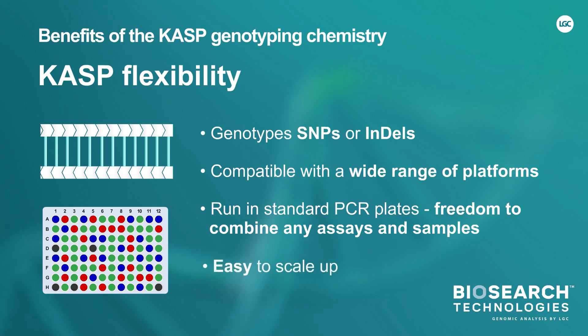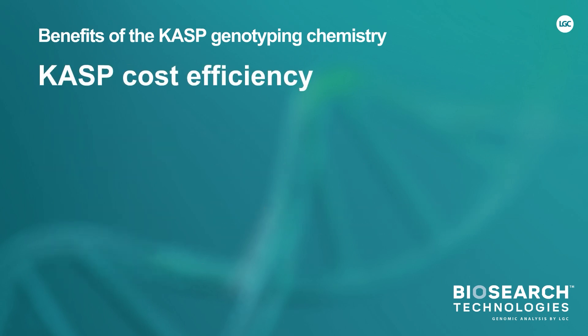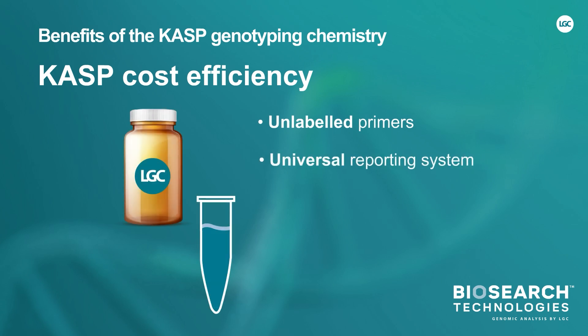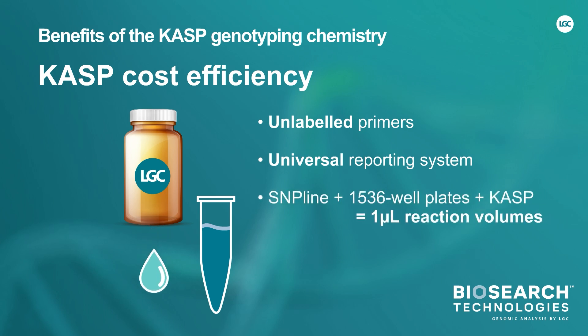Consequently, CASP is suitable for running anything from a handful of samples on a qPCR instrument to thousands of samples in a day using Biosearch Technologies' SNIP-Line platform. CASP is a PCR-based chemistry combining unlabeled primers with a universal reporting system, thereby avoiding the cost associated with fluorescently labeled probe assays. CASP reactions can be easily run in your laboratory without the need for specialist equipment. Biosearch Technologies' SNIP-Line platform and 1536-well plates can run reduced CASP reaction volumes down to 1 microliter. Whatever the scale of your project, CASP genotyping chemistry enables you to generate more genotyping data from your budget.